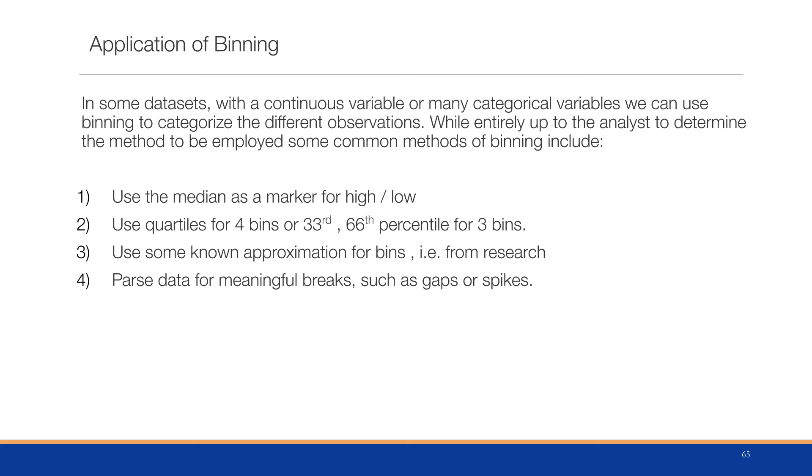In some datasets with a continuous variable or many categorical variables, we can use binning to categorize different observations. While it's entirely up to the analyst to determine the method to be employed, some common methods of binning include using the median as a marker for high or low, using quartiles for four bins, or the 33rd and 66th percentile for three bins, things below 33, below 66, and above 66.